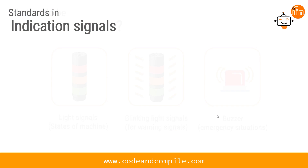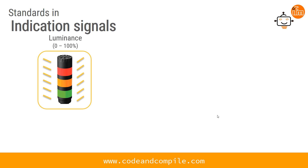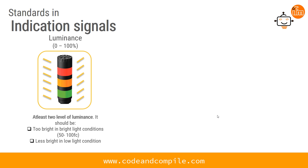Now we will see some standards for indication signals. The first standard is luminance: the light should be bright enough in bright light conditions so the user can see it, but not too bright in low light conditions so it does not affect nearby indicating signals.